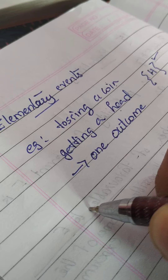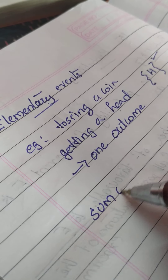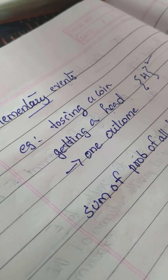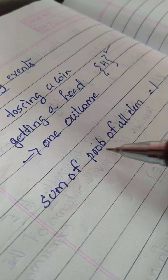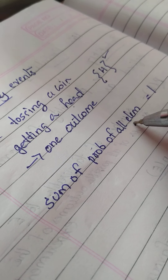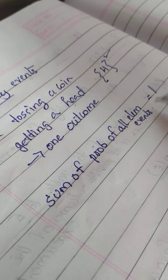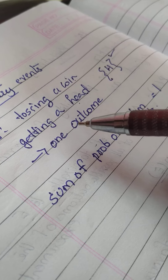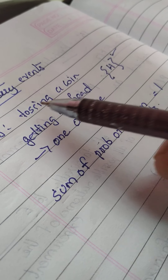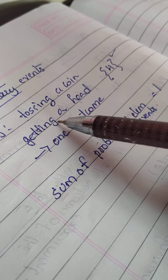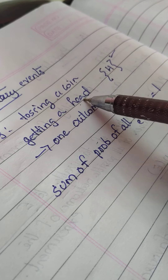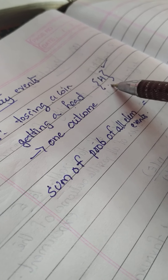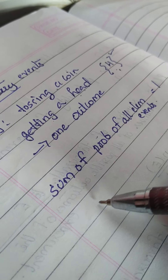We have a condition stating that the sum of probabilities of all elementary events is equal to one. Elementary events means an event is called an elementary event if it has only one outcome. If I am taking the example of tossing a coin and the event is getting a head, it is an elementary event because it has only one outcome.